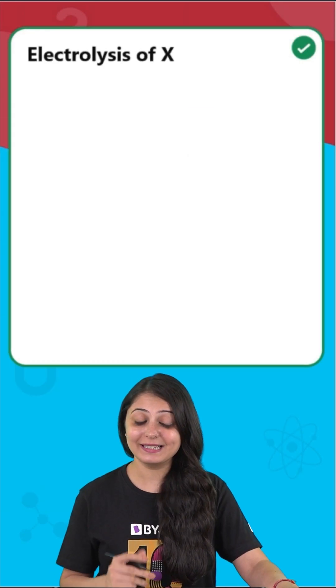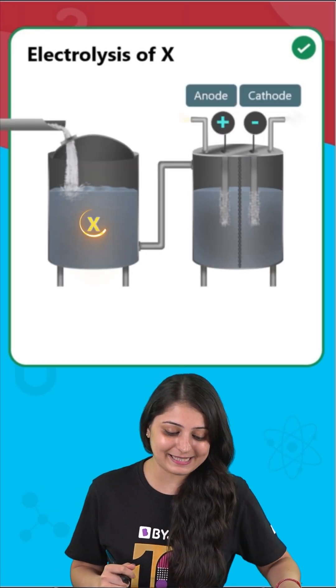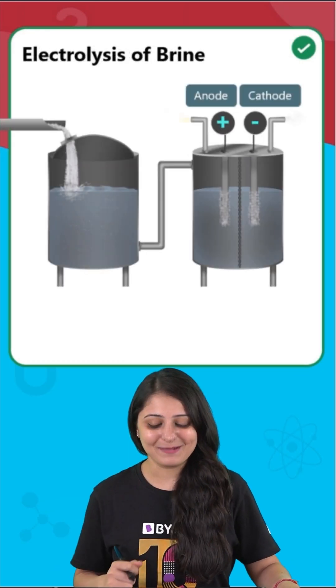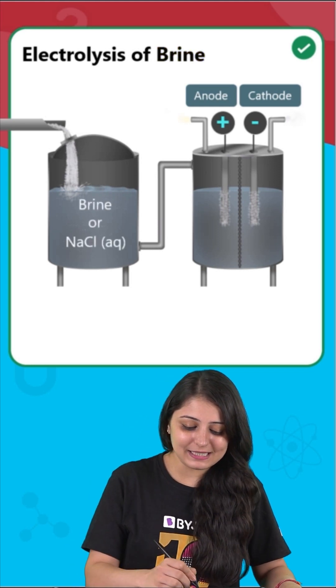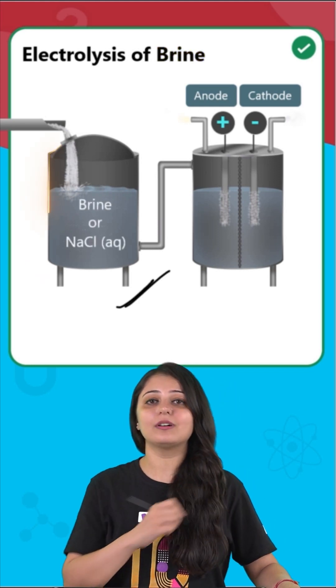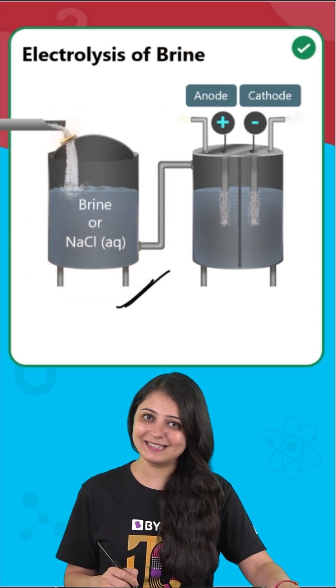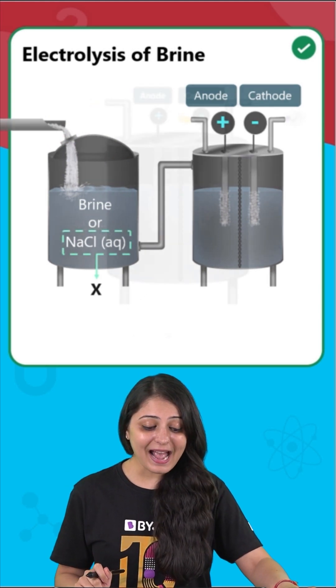So let's first figure out what is X. Now X is nothing but brine, that means it is actually the concentrated solution of sodium chloride in water. So we know what X is now.